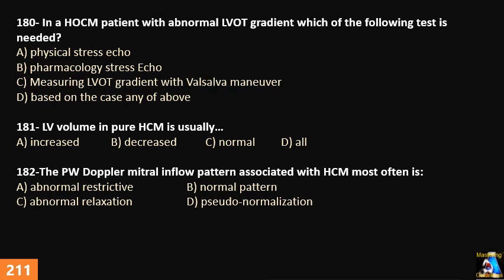Question 181: Left ventricular volume in pure hypertrophic cardiomyopathy usually is: increased, decreased, normal, or all of them? Question 182: The Doppler mitral inflow pattern associated with hypertrophic cardiomyopathy most often is: A) abnormal restrictive, B) normal pattern, C) abnormal relaxation, or D) pseudonormalization.